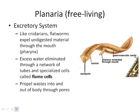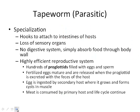The excretory system is basically just getting rid of wastes. In humans we use kidneys and the large intestine, but for flatworms they bring in food and expel undigested matter right back through the mouth. Excess water is eliminated through a network of tubes and specialized structures called flame cells, which propel waste in and out of the body through pores.